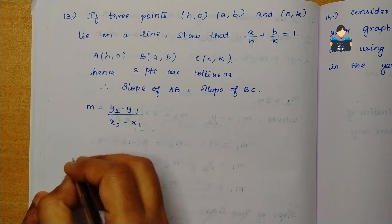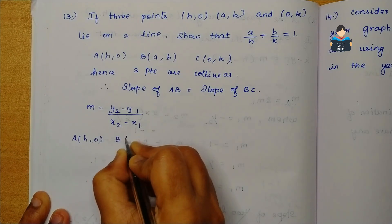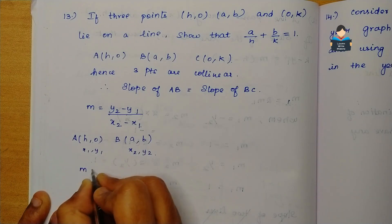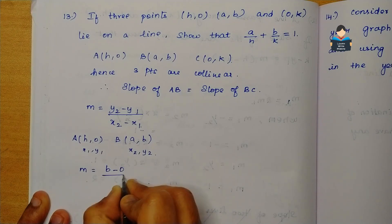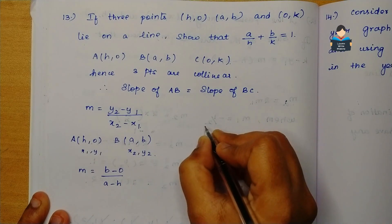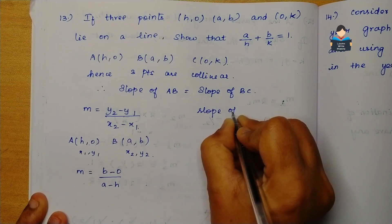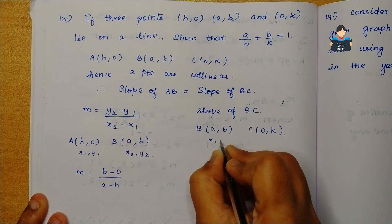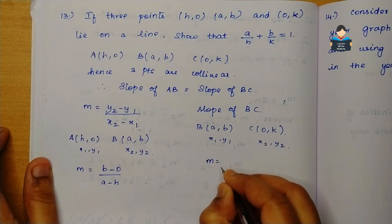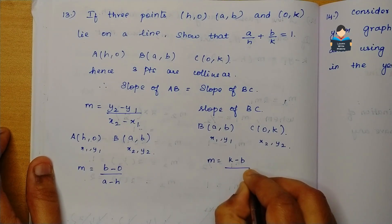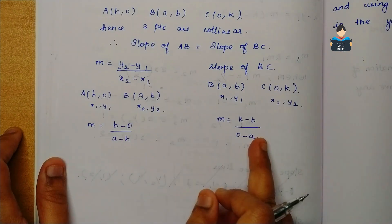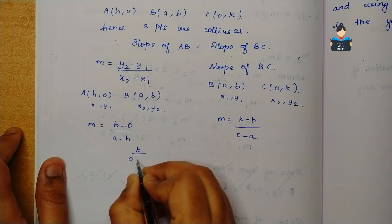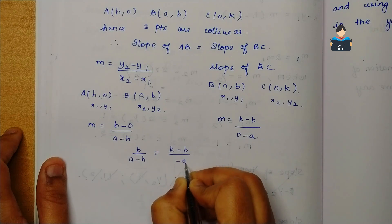So, for points A(h, 0) and B(a, b): x1 = h, y1 = 0, x2 = a, y2 = b. Slope of AB is equal to b minus 0 by a minus h. For points B(a, b) and C(0, k): x1 = a, y1 = b, x2 = 0, y2 = k. Slope of BC is equal to k minus b by 0 minus a. Setting slope AB equal to slope BC: b by a minus h is equal to k minus b by minus a.